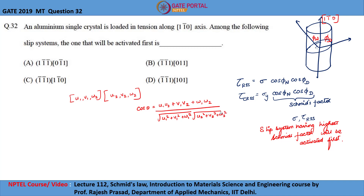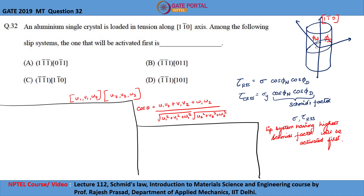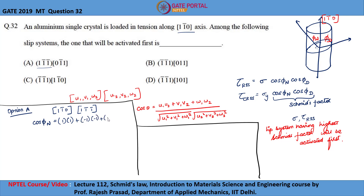Let us now find the Schmid's factor for option A. The tensile direction is [1 1̄ 0] and the direction normal to the slip plane (1 1̄ 1̄) is [1 1̄ 1̄]. So cosφₙ = (u₁u₂ + v₁v₂ + w₁w₂) divided by √2 × √3. On solving, we get cosφₙ = 2/√6.